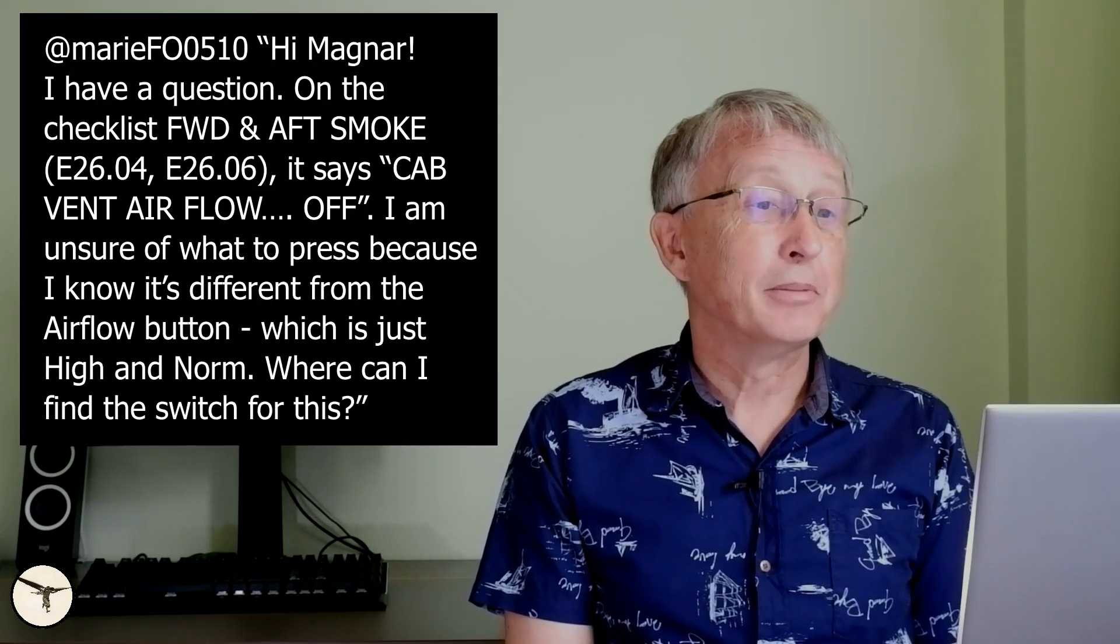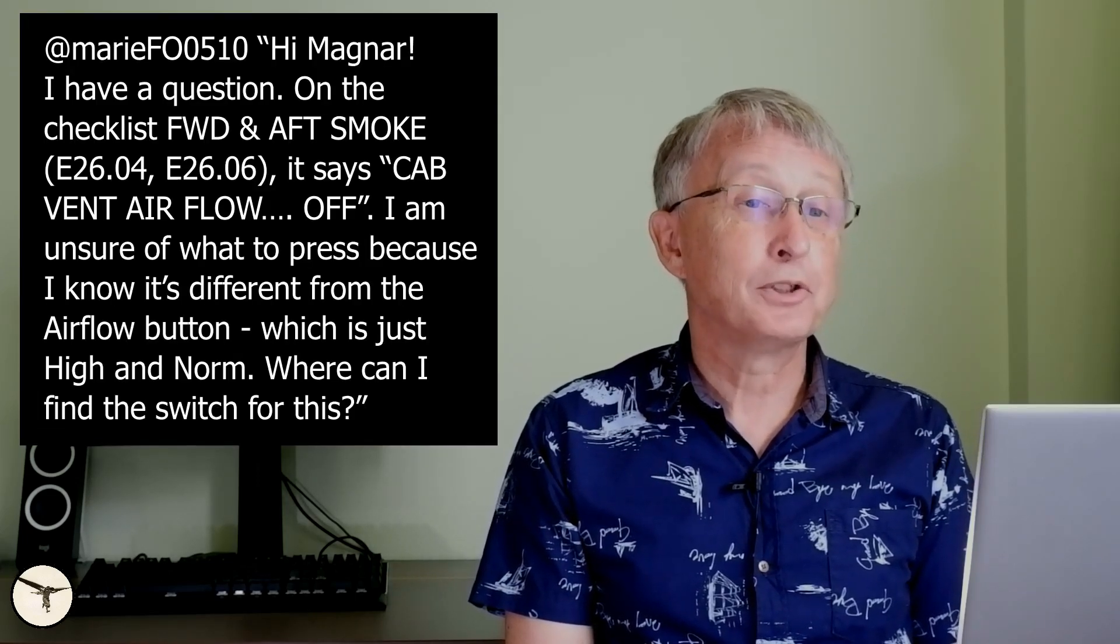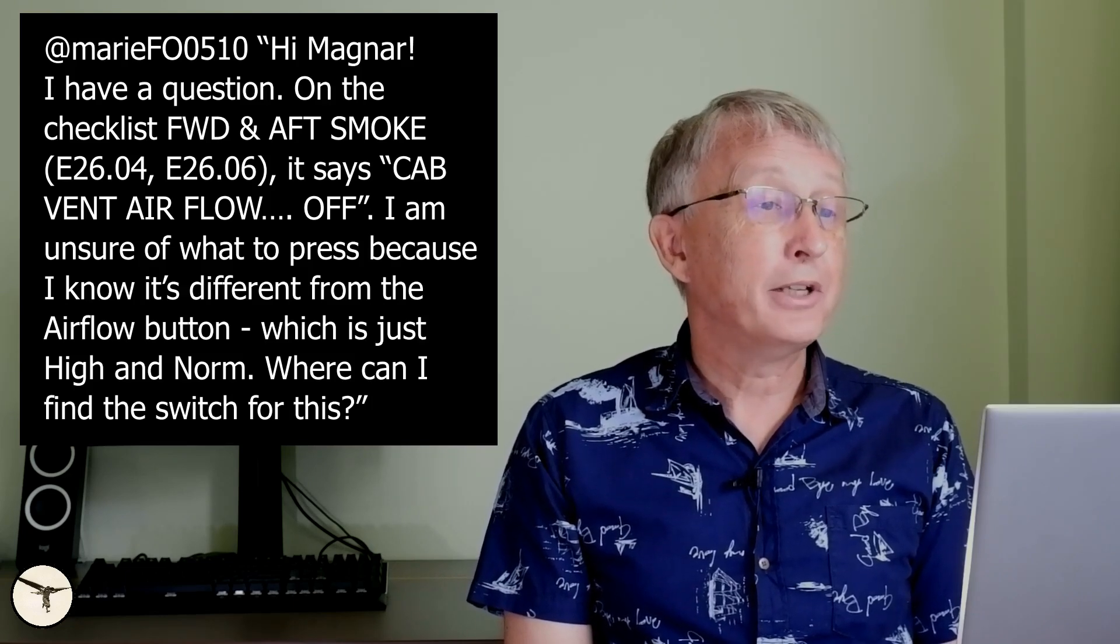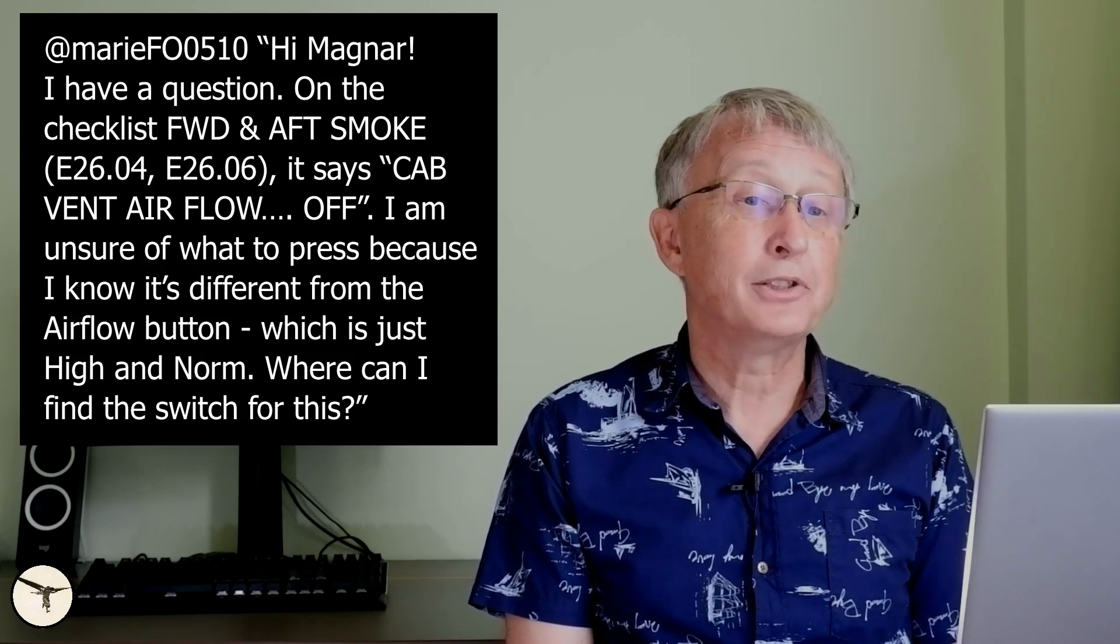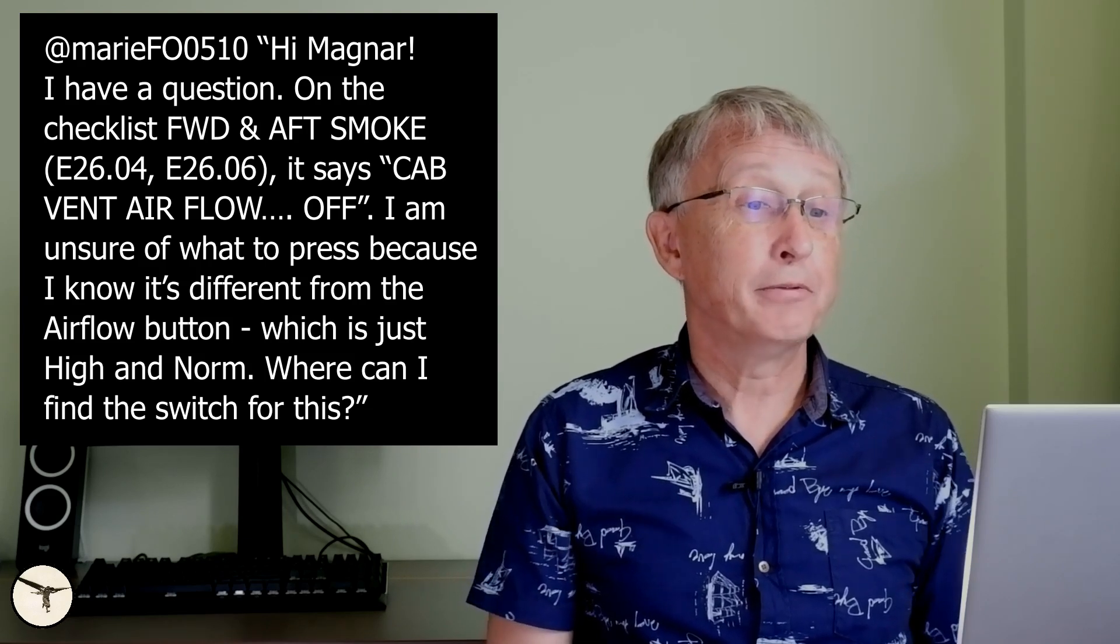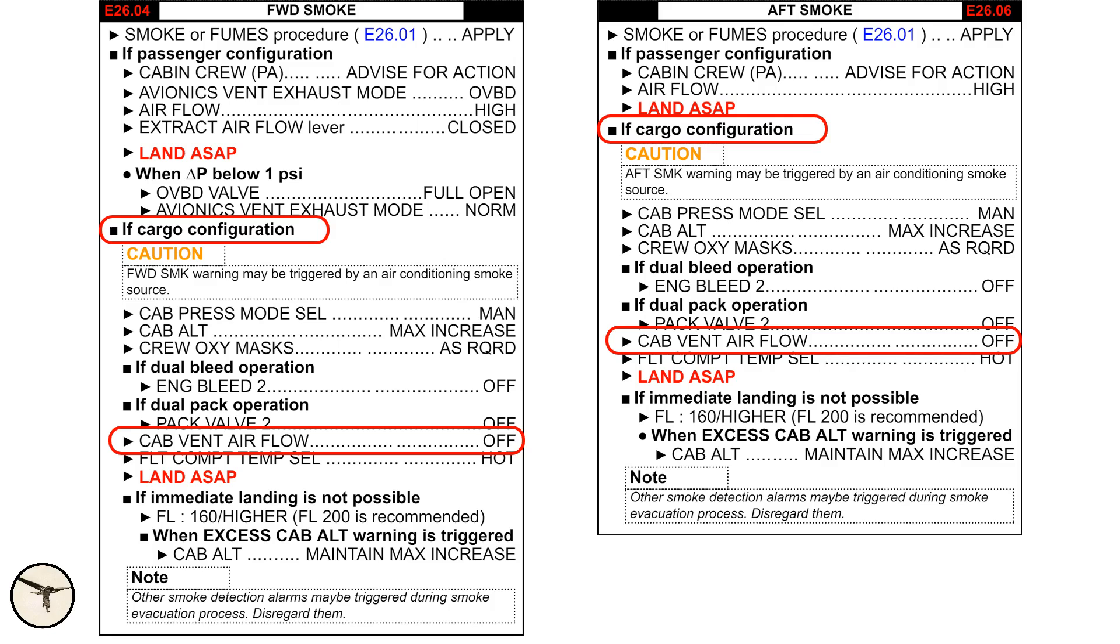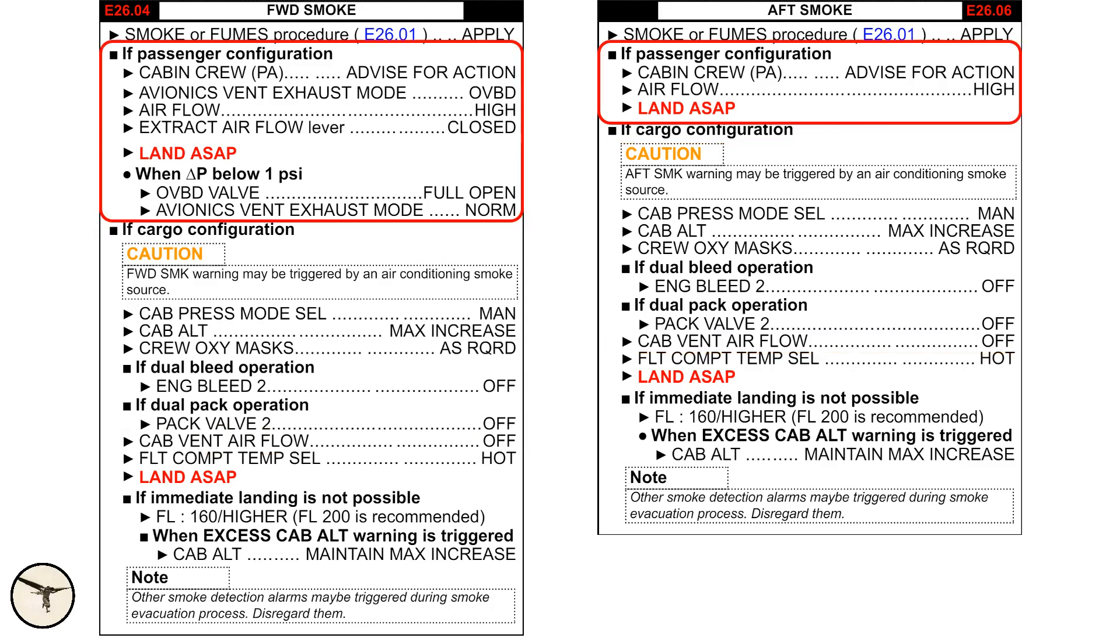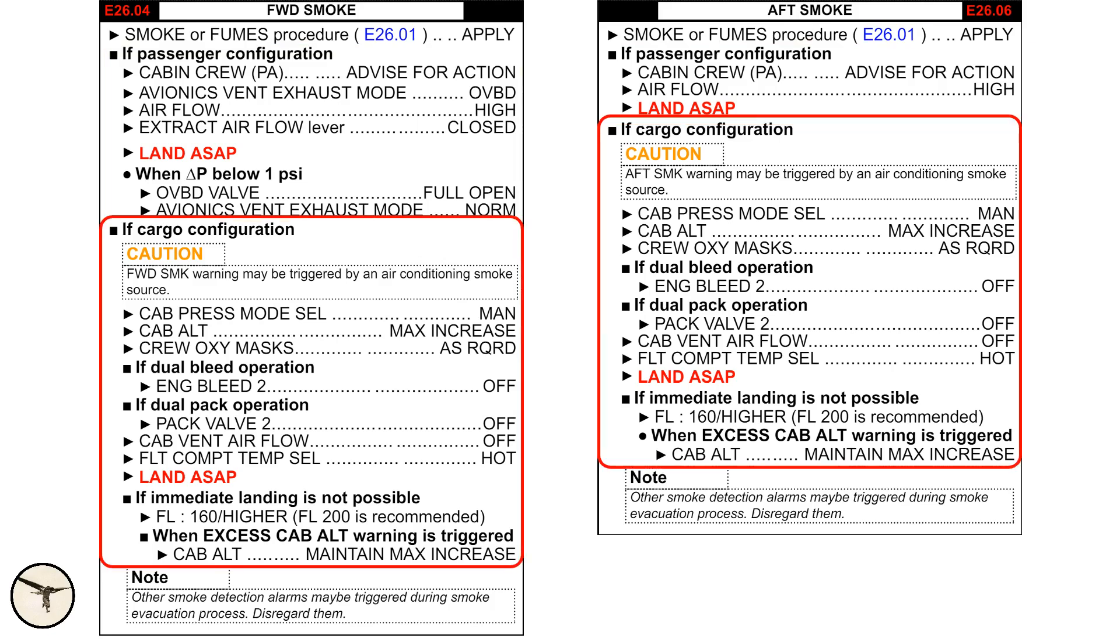Hi Magnar. I have a question. On the checklist for forward and aft smoke, it says cabin airflow off. I am unsure what to press because I know it's different from the airflow button, which is just high and norm. Where can I find the switch for this? This switch is only available on the cargo version of the ATR. So the passenger version has only the first part of the checklist. And then you have the cargo version where this switch is mentioned. If you fly the cargo version, can you please send me a picture of the panel? That would be very nice. Thank you.